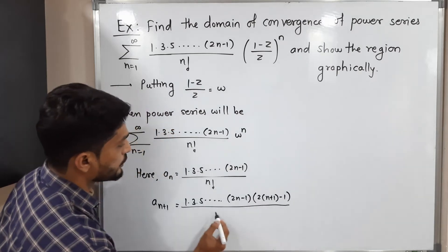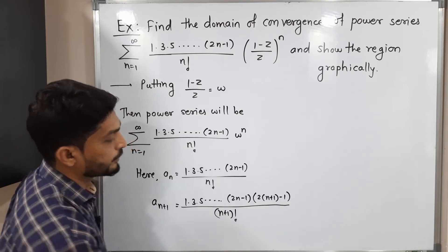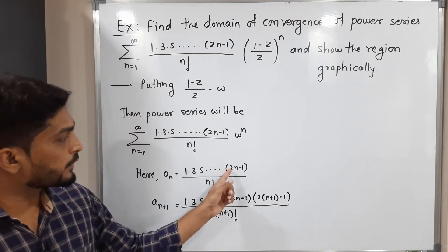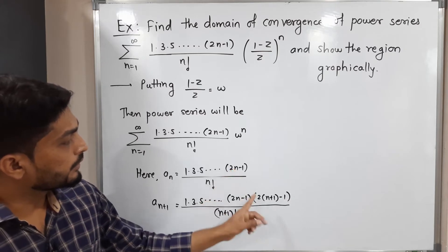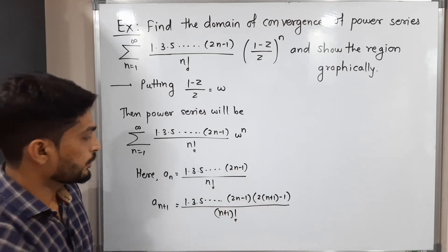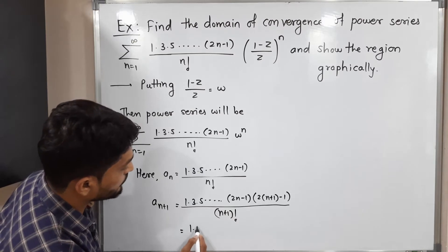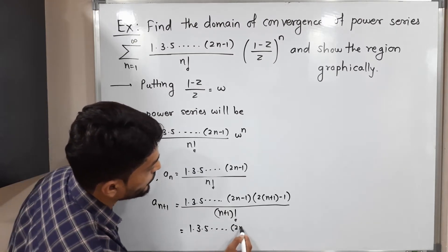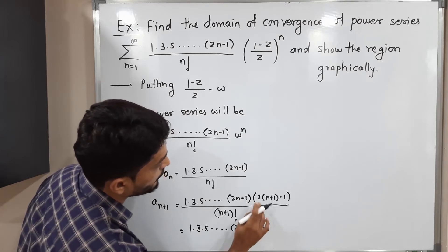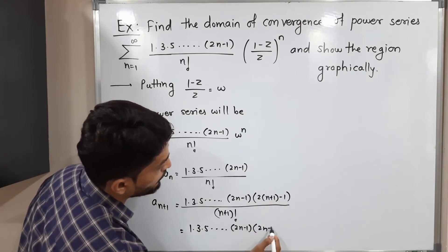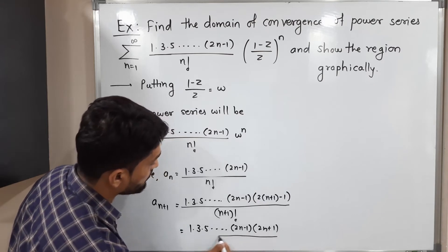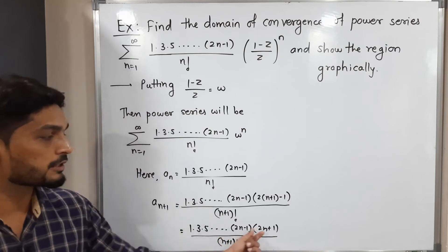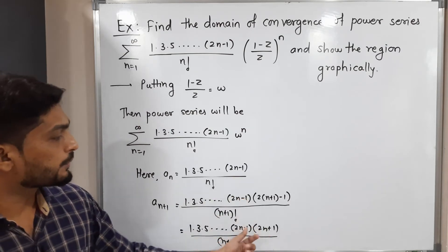Simplifying: a_{n+1} equals 1 times 3 times 5 and so on to (2n minus 1) times (2n+1), divided by (n+1) factorial. The term (2n+1) is the new factor appended to the previous term.